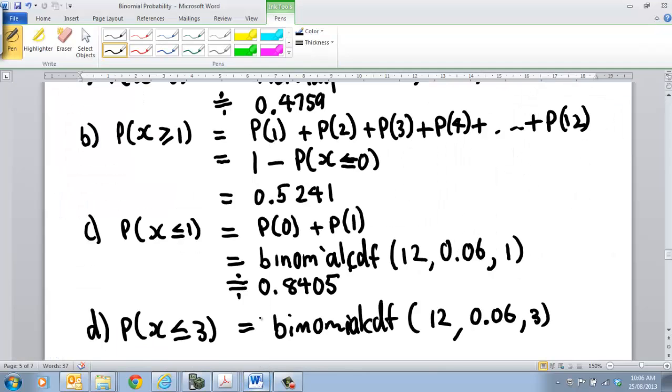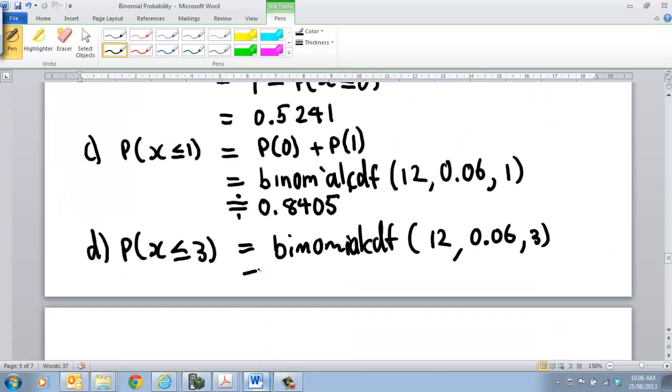So that's 0.9957. You know, you'd be expecting to get either 0. There'd be a high percentage of that. Then you might get 1 or 2 or 3, so you'd be expecting that as a reasonable value. You'd be pretty confident that you're only going to get no more than 3 defective components when you're testing 12 of them. So I hope this helps you when you're looking at using your technology to answer these binomial questions.